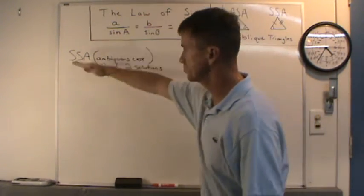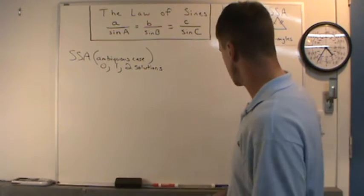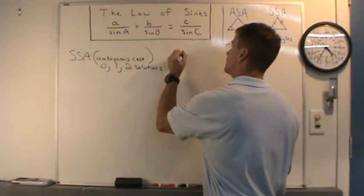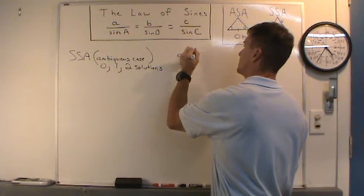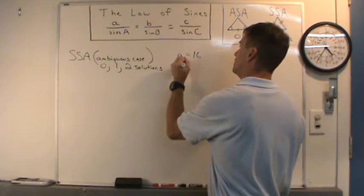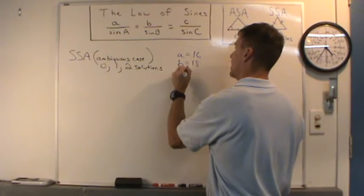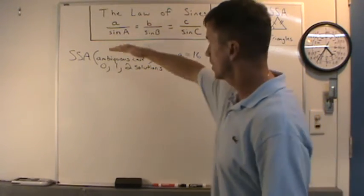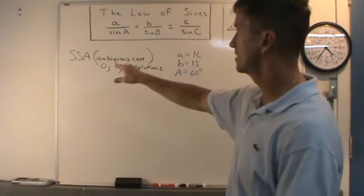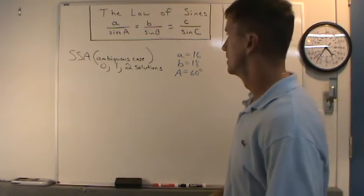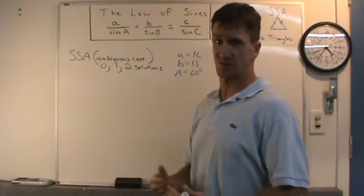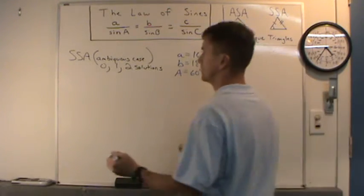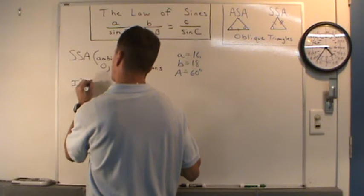Let me use an example. Let's say we're given side a equals 16, side b equals 18, and angle A is 60 degrees. I'll walk you through the steps for the SSA ambiguous case to determine whether there is one solution, two solutions, or zero solutions.